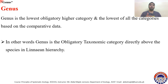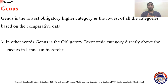Genus is the obligatory taxonomic category directly above species in the Linnaean hierarchy. In that Linnaean hierarchy, genus lies second from the bottom — species first, then genus.